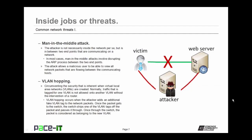The man-in-the-middle attack is another threat. The attacker is in between two endpoints that are communicating on a network. In most cases, the man-in-the-middle attack involves disrupting the ARP process between the two endpoints. The attack allows a malicious user to view all network packets flowing between the communicating hosts. Often, a man-in-the-middle attack is used in an attempt to gain sensitive information like network credentials.